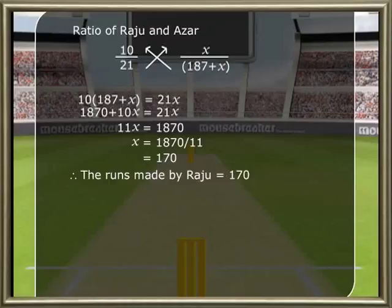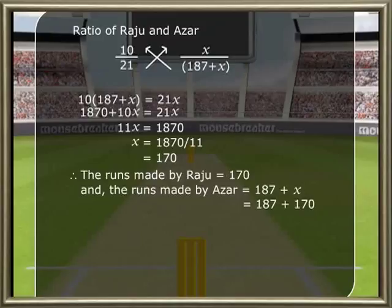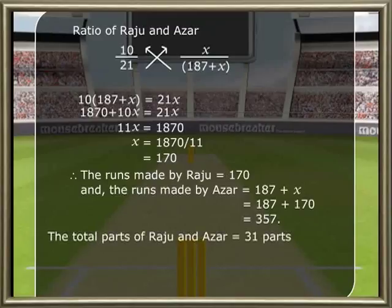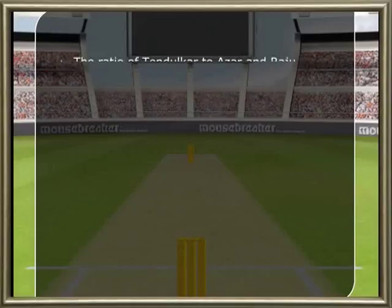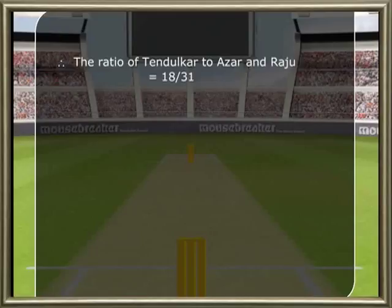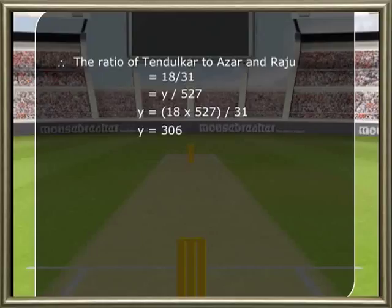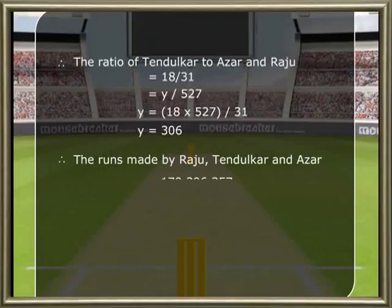Therefore the runs made by Raju are 170. The runs made by Azhar, which is 187 plus x, will now become 187 plus 170 which is 357 runs. The total parts of Raju and Azhar is equal to 31 parts and the total runs made by Raju and Azhar are 170 plus 357 which is equal to 527. Therefore the ratio of Tendulkar to Azhar and Raju is equal to 18 by 31 which equals y by 527. Therefore y is equal to 18 into 527 by 31, which equals 306. Therefore the runs made by Raju, Tendulkar and Azhar are 170, 306 and 357 respectively.